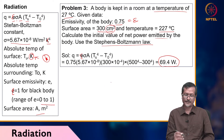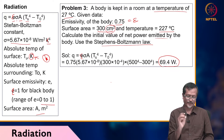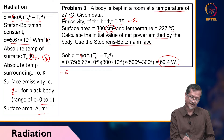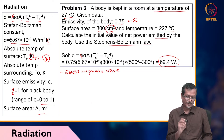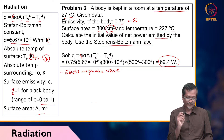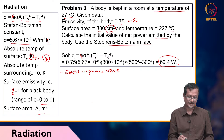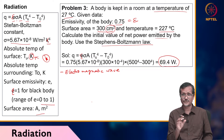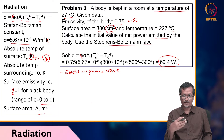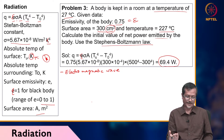Radiation is actually an electromagnetic wave — thermal radiation is electromagnetic in nature. Thermal radiation is emitted by every particle having a temperature greater than absolute zero. At absolute zero, it will not emit any radiation, but above absolute zero, all particles will be radiating some energy.